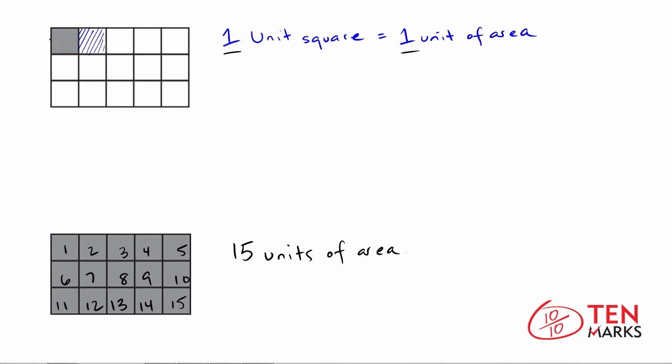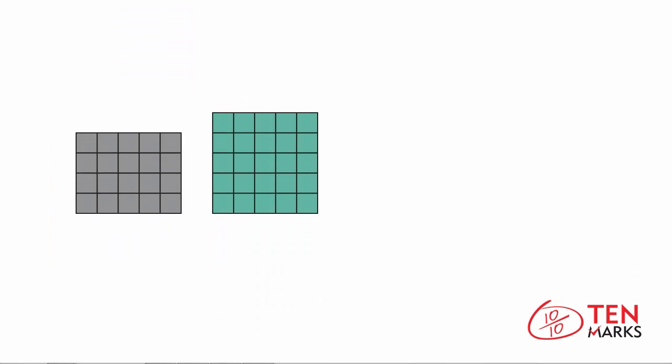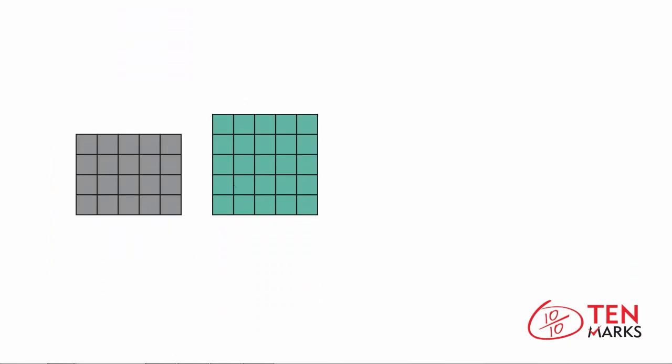Now let's solve a problem about area together. So here you see two different shapes. And what we want to know is which shape has the greater area. As you can see, both shapes have been broken down into unit squares. And one unit square corresponds to one unit of area. So if we want to find the area of each shape, we would count the unit squares that are contained within the large rectangle. Let's count.